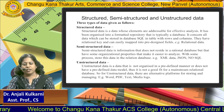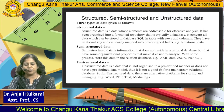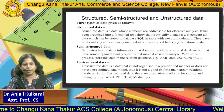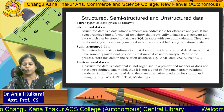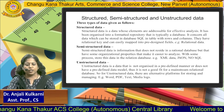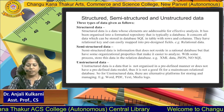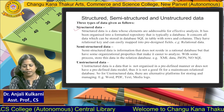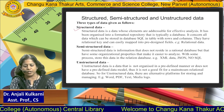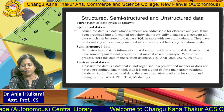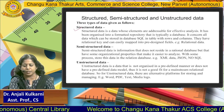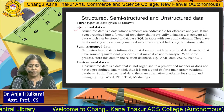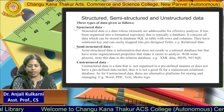Hello all of you. The next topic is structured, semi-structured and unstructured data, which comes under data science. There are three types of data. The first one is structured data. Structured data is data which is stored in a fixed structure format, that is in terms of rows and columns, like an SQL database.